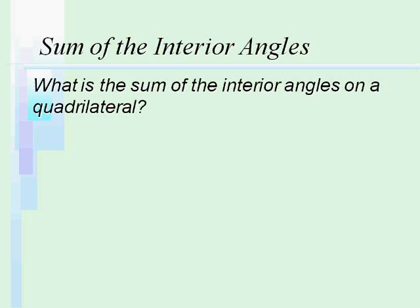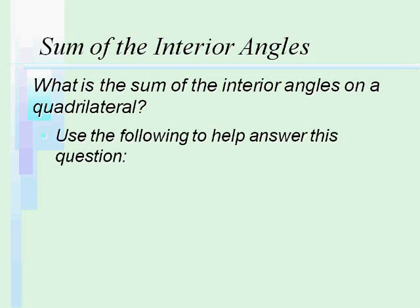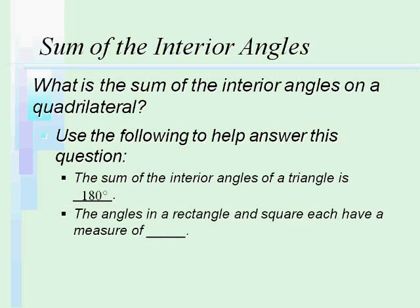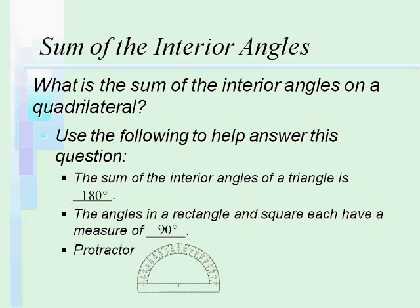Now to figure out what is the sum of the interior angles on a quadrilateral, use the following to help answer this question. The sum of the interior angles of a triangle is 180 degrees. The angles in a rectangle and square each have a measure of 90 degrees. And all else fails, you can use your protractor. Using all of that, you should come up with the thought that the sum of the interior angles on a quadrilateral add up to 360 degrees.